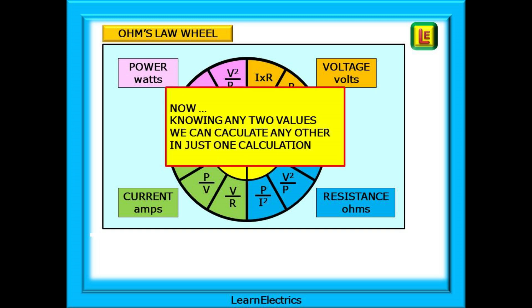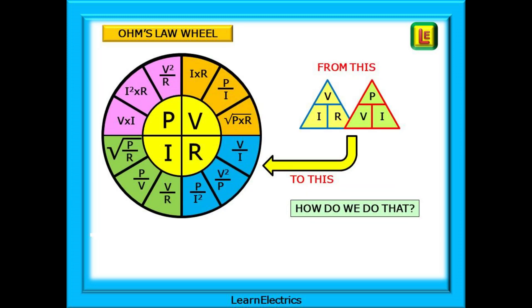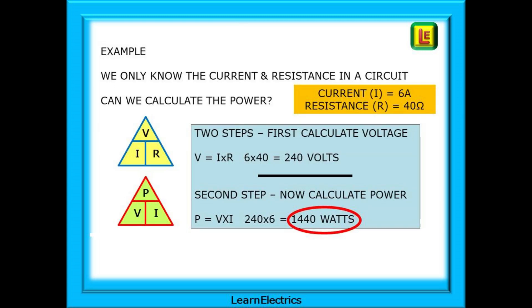Now, if we know any two values, can we calculate any other in just one calculation? So how do we get from two triangles to the Ohm's Law wheel? Let's go back to basics and see how this can be.